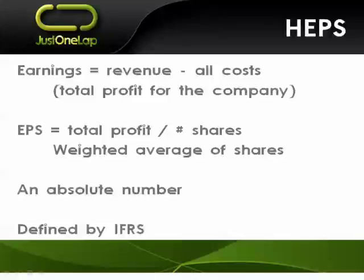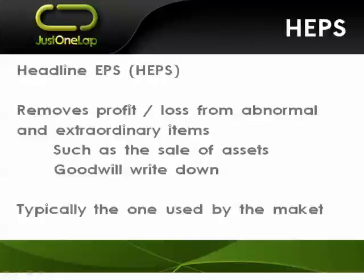Earnings per share is an absolute number defined by IFRS, which is the accounting standard, so when we look at it we know exactly what we're looking at. That said, it's not a massively useful number because of one-off costs and one-off profits — hence we go to what we call HEPS: headline earnings per share.